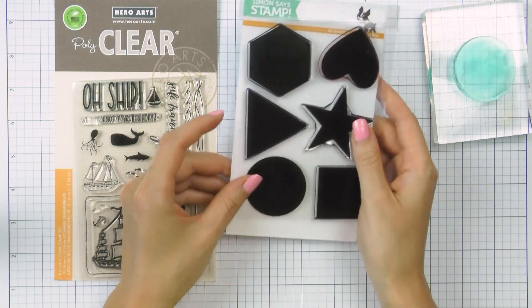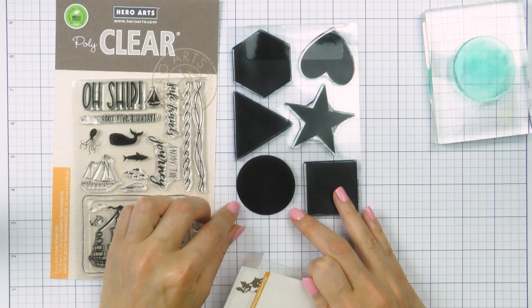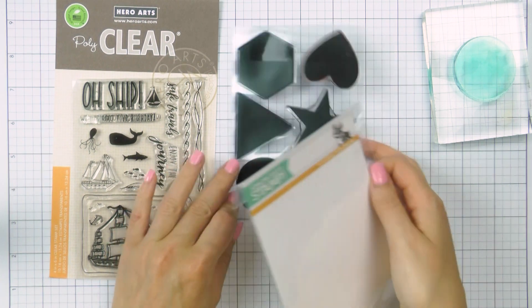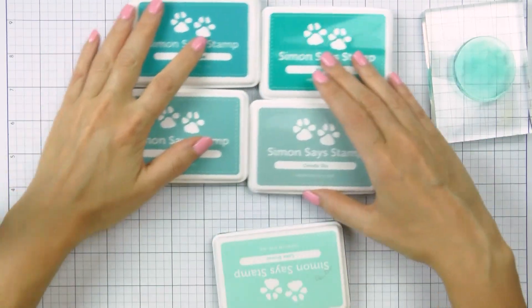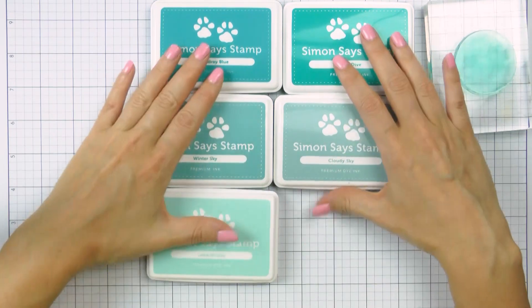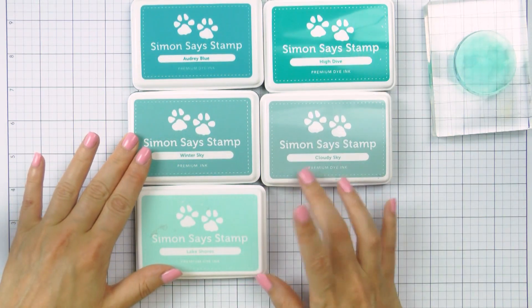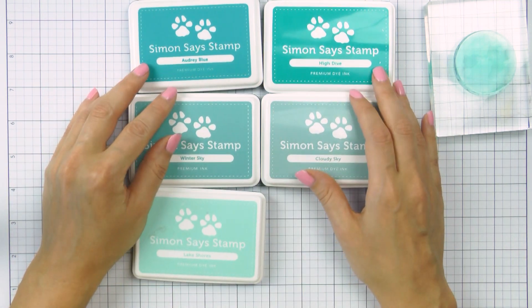I will be using a circle shape from here to stamp a background and I actually really love the size of this circle. It measures about an inch and three-quarters in diameter so it's a pretty big circle. I have already picked a few colors of ink for my stamping and I'm going with the aqua colors today. I have several ink pads from Simon and these are Lakeshore, Winter Sky and Cloudy Sky, Audrey Blue and High Dive.